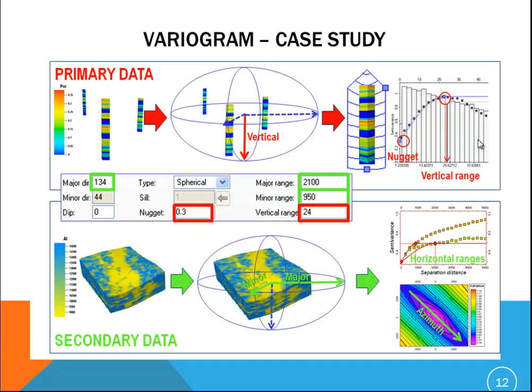A quick case study of a variogram model shows primary and secondary data usages. Sometimes, covariate attributes help a lot for population and distribution parameters.